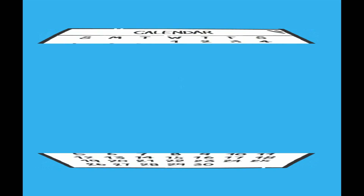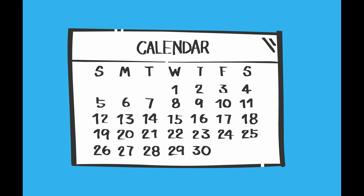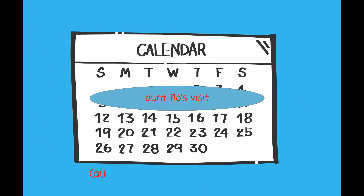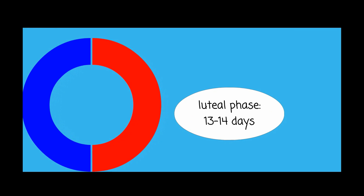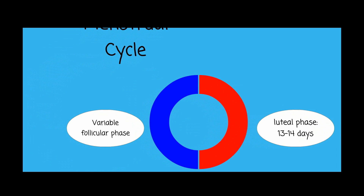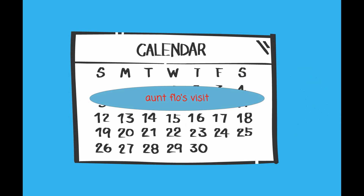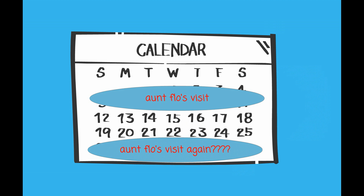Beginning around age 40, as the number of a woman's ovarian follicles decrease, there are changes that occur to her menstrual cycle. She may notice shortening or lengthening of her cycles. The luteal phase of the cycle stays the same at 13 to 14 days. The variation in cycle length is related to changes in the follicular phase. Women may start noticing that their cycle length is now 21 days. Remember that cycle length is measured from the first day of one period to the first day of the next period.